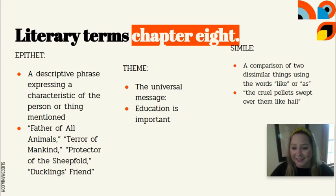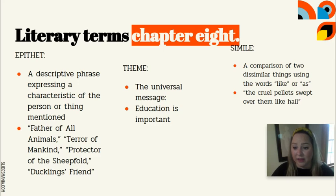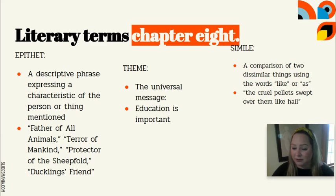Here in Chapter 8, we now have an abundance of epithets for Napoleon. He is called Father of All Animals, Terror of Mankind, Protector of the Sheepfold, and Duckling's Friend, among other things.